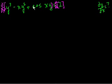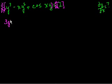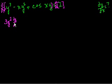Let's take the derivative of each of these terms. The derivative with respect to x of y cubed — we're just doing the chain rule. So it's 3y squared: that's the derivative of this function with respect to y, times the derivative of y with respect to x, dy/dx. That's just the chain rule.